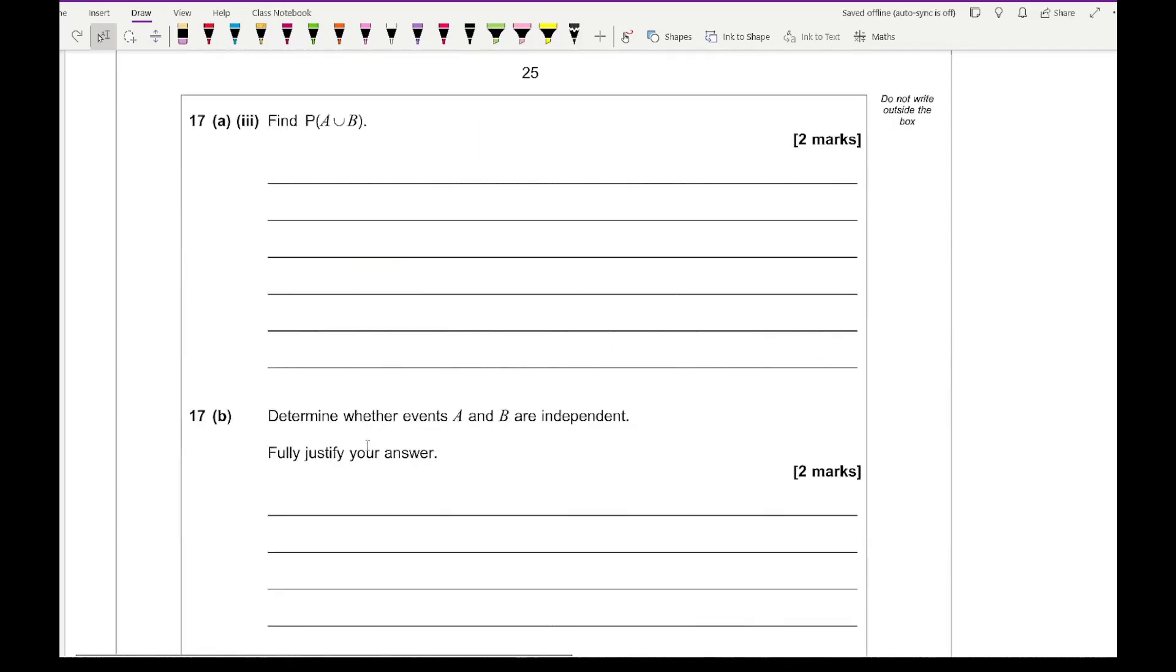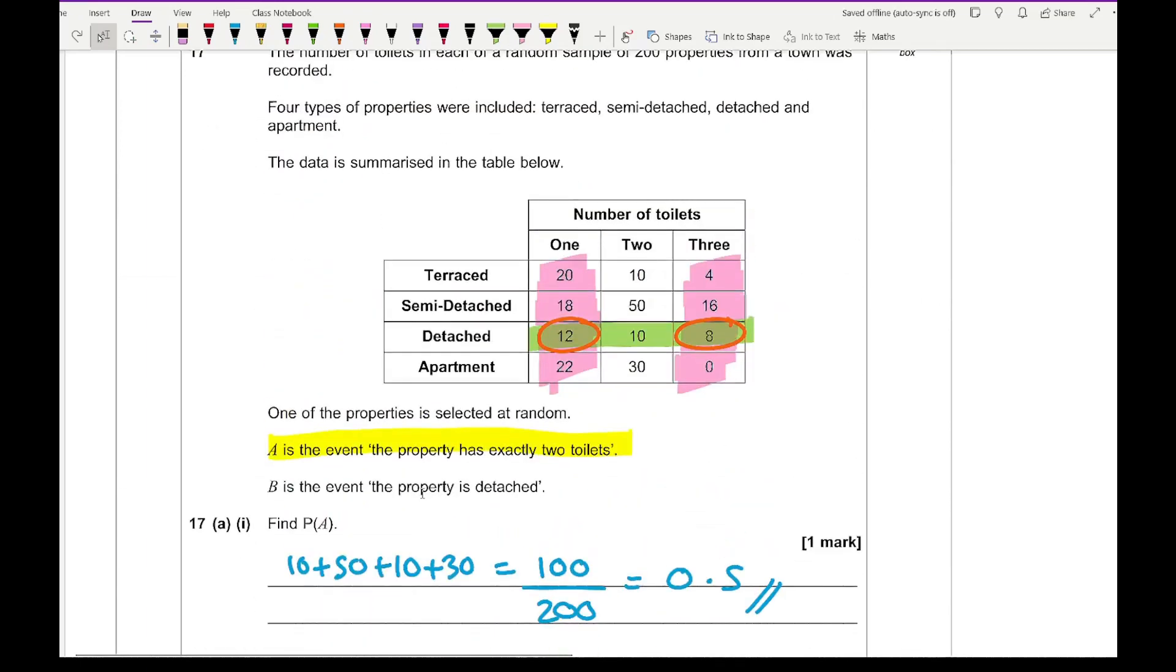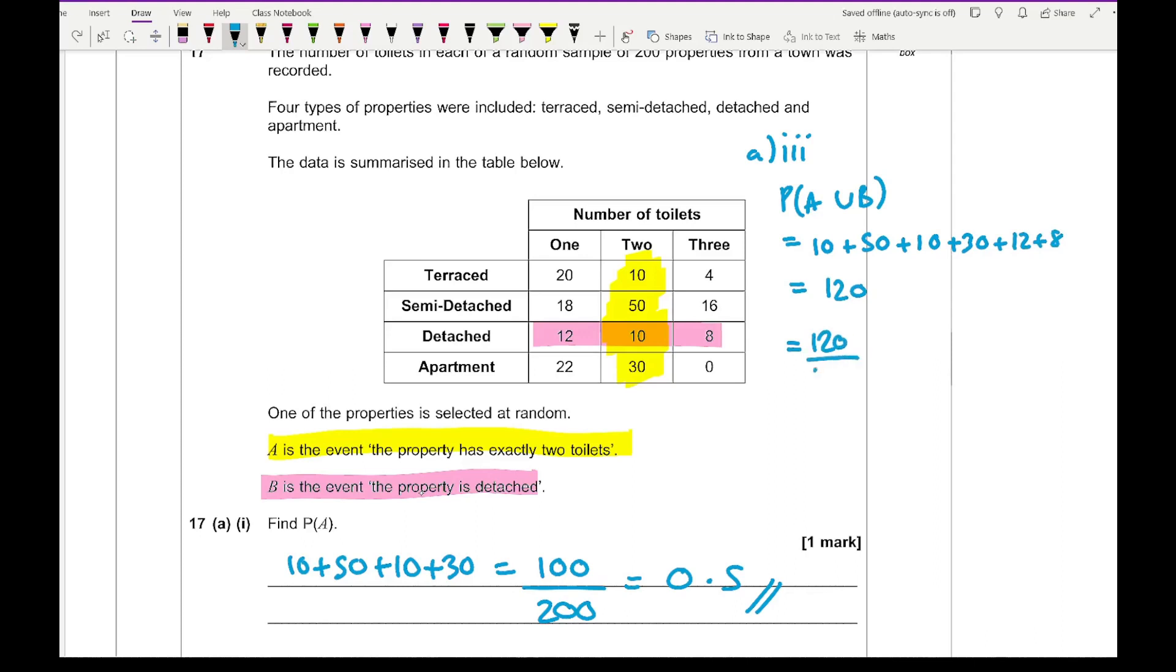For part 17 AIII, it says find the probability of A or B. So the probability of A is this here, and the probability of B is this here. What I'm wanting is the probability of A or B, which is going to be all the bits that are shaded. So 10 plus 50 plus 10 plus 30 plus 12 plus 8, which comes up to 120. So it's going to equal 120 over 200, which simplifies to give me 0.6 or 3 fifths.